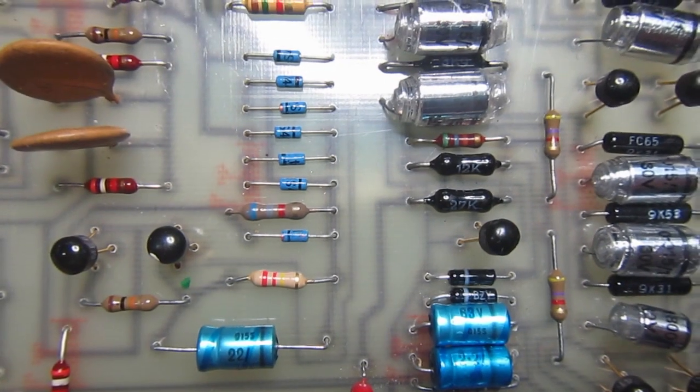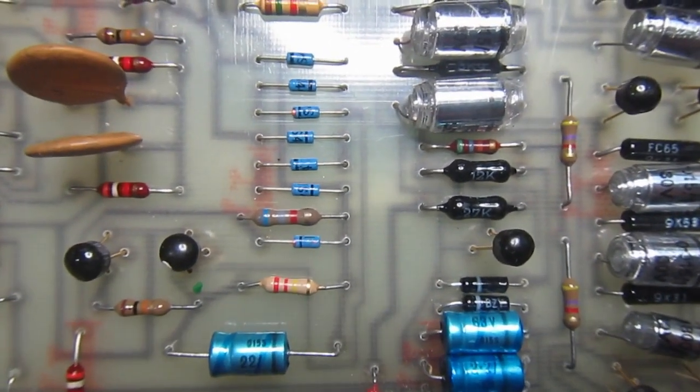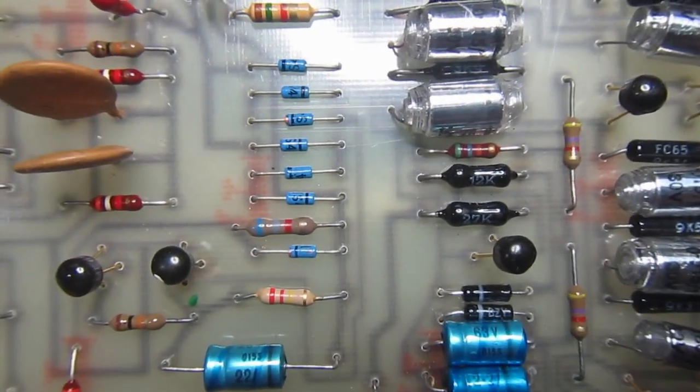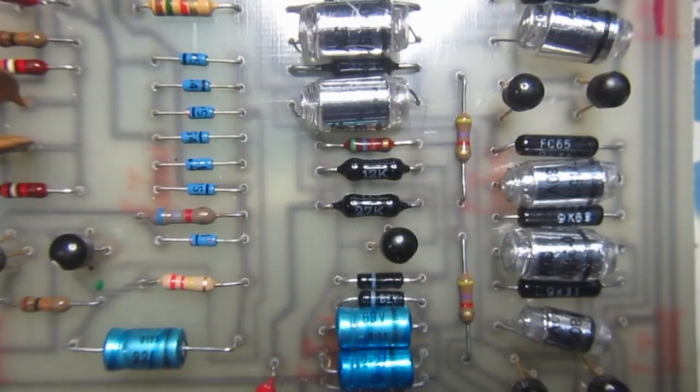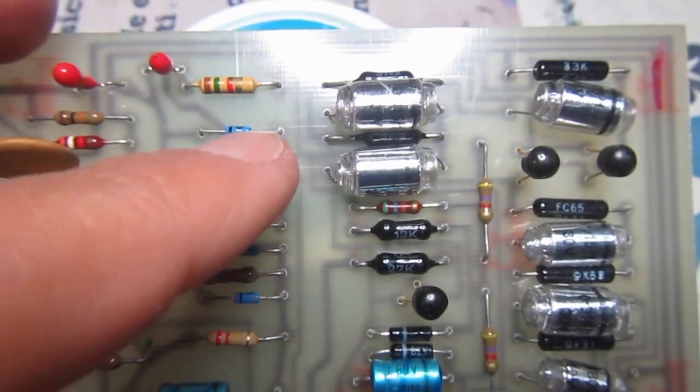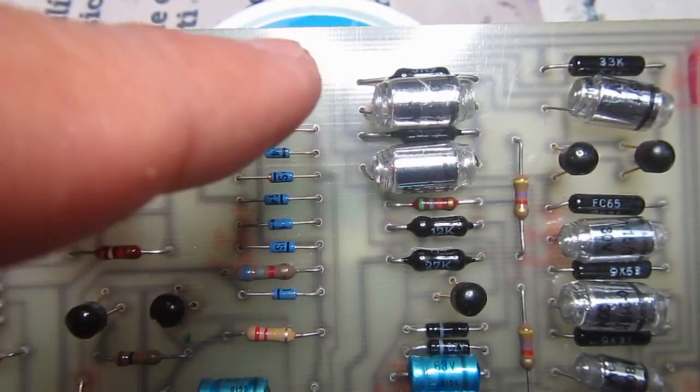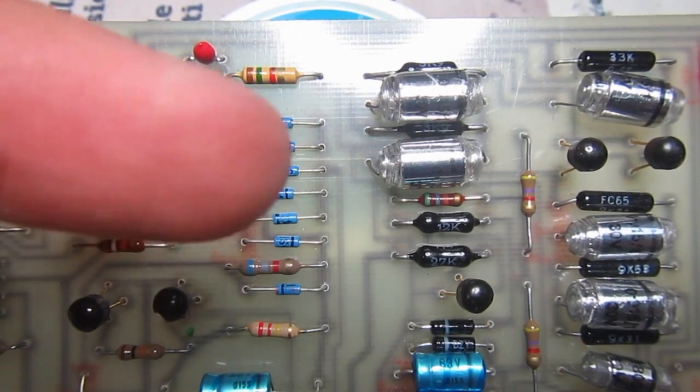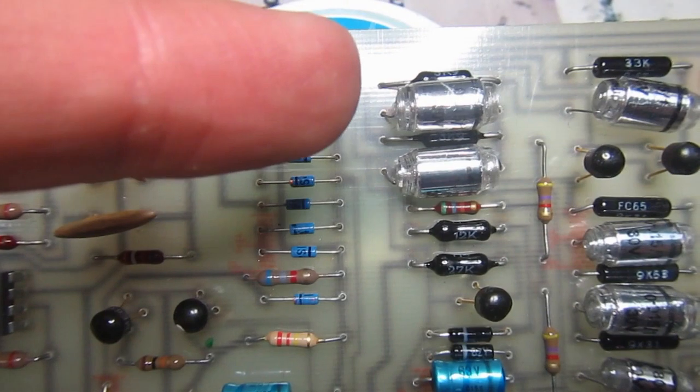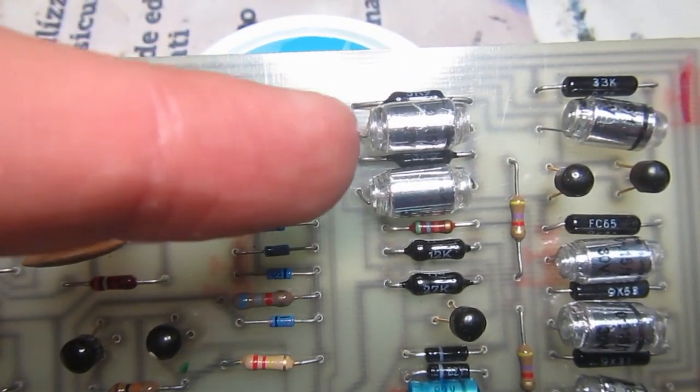Now let's have a look at one of the boards and the components. They are indeed of very high quality for that time. The silvery capacitors are polystyrene dielectric, they are 1% tolerance on the value.